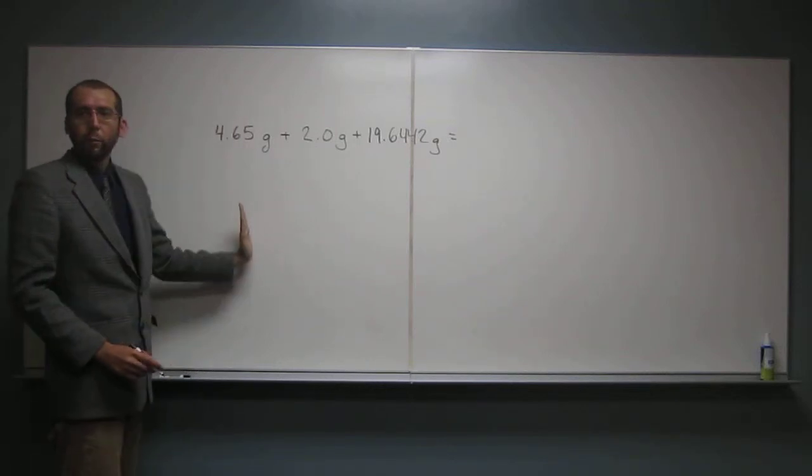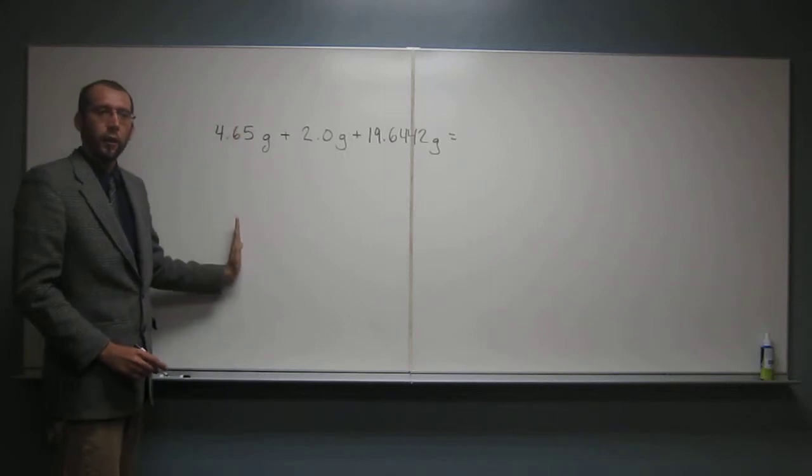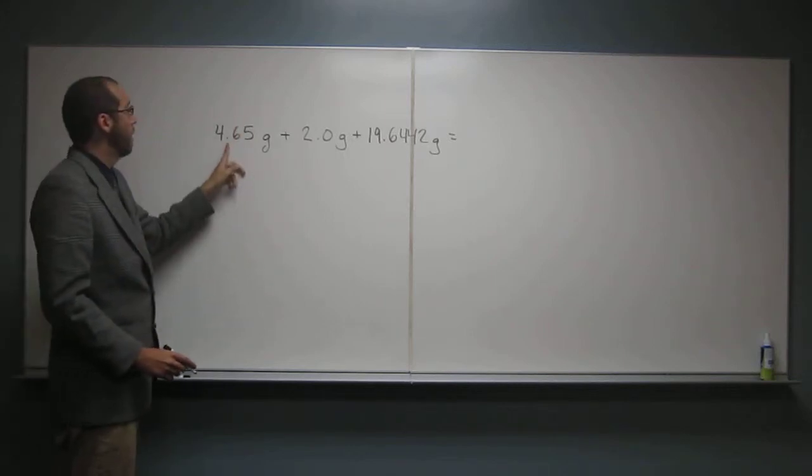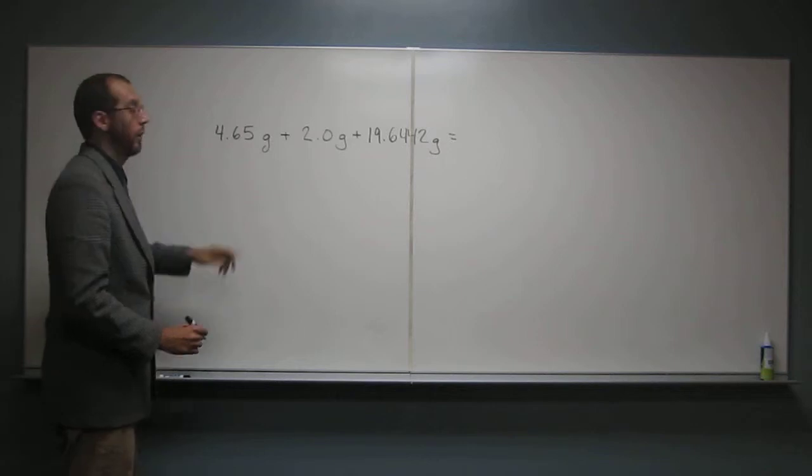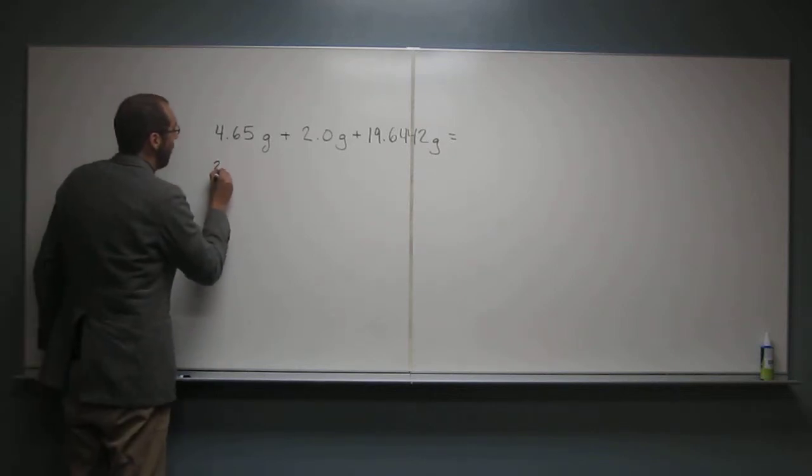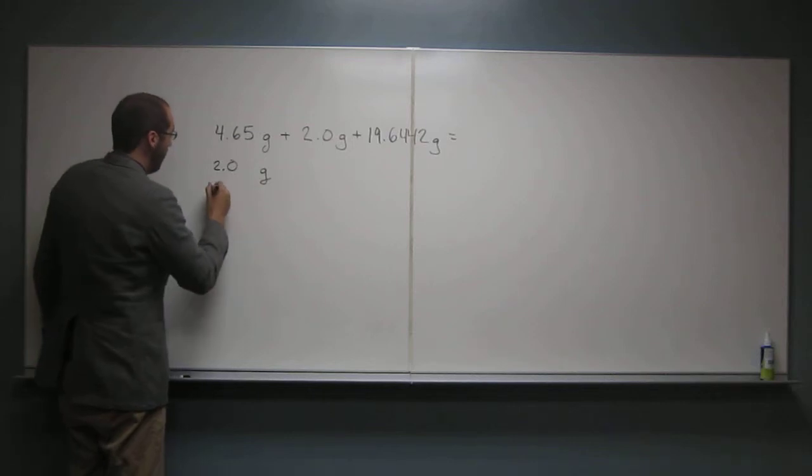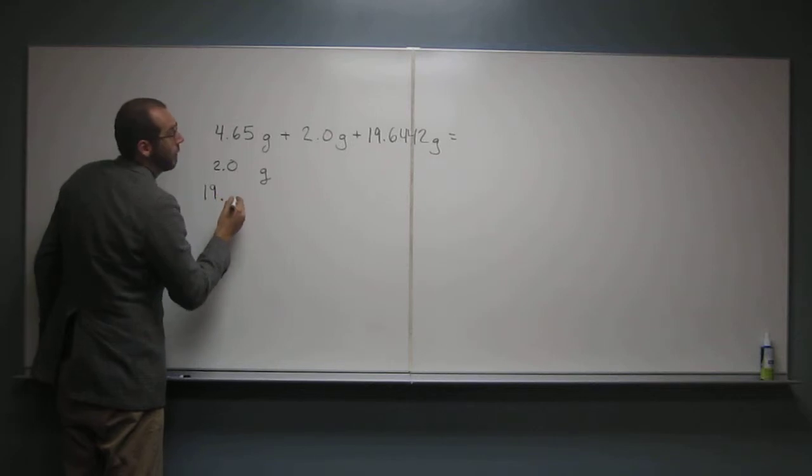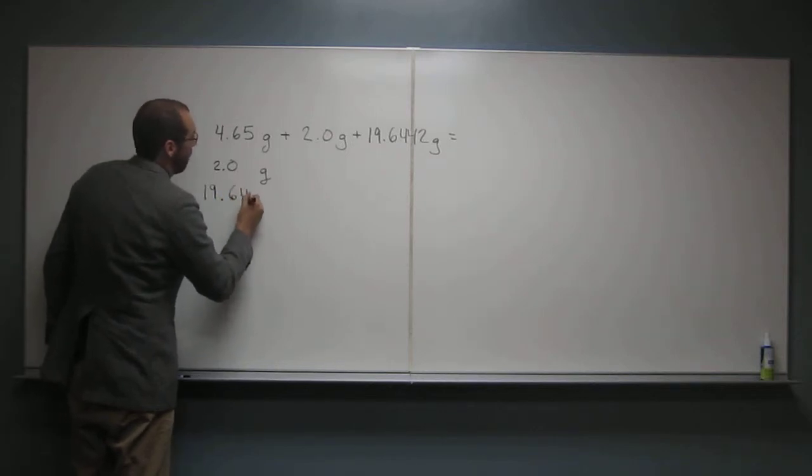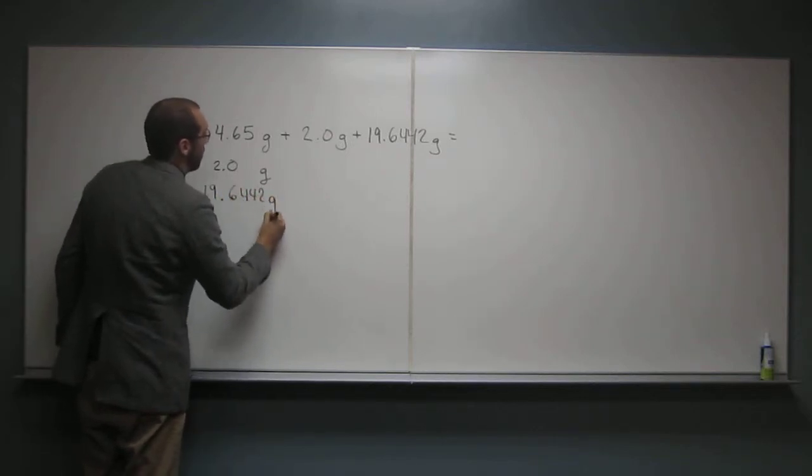So what I like to do is put the decimal place underneath all of them, underneath the first number, where the decimal place is on the first number. So 2.0 grams and 19.6442 grams.